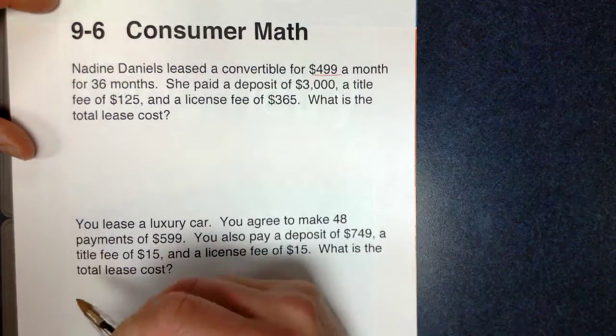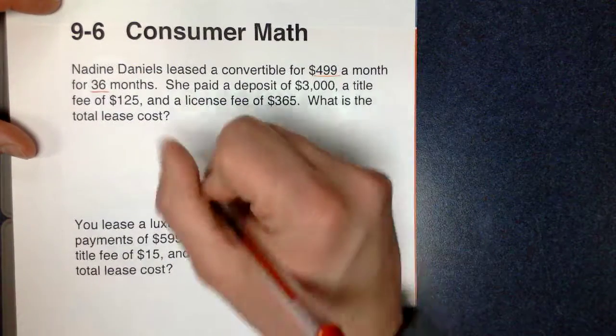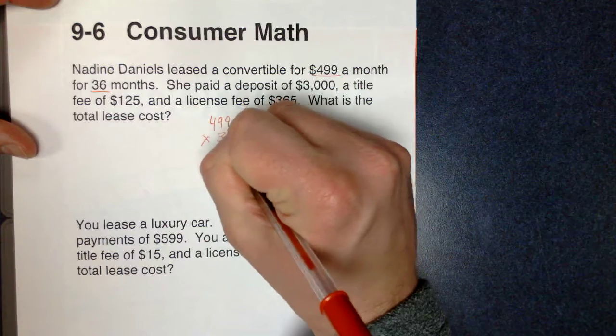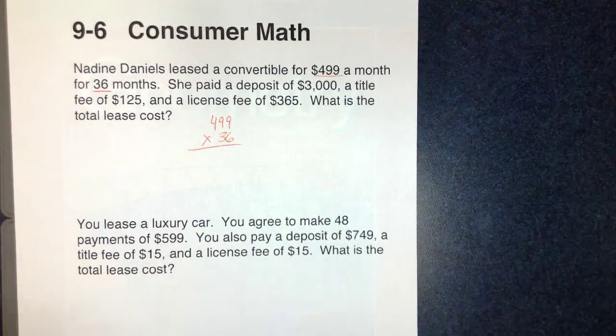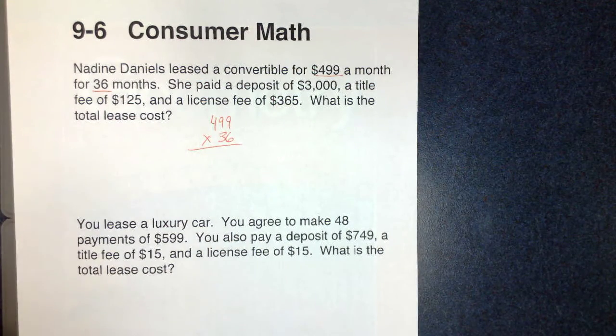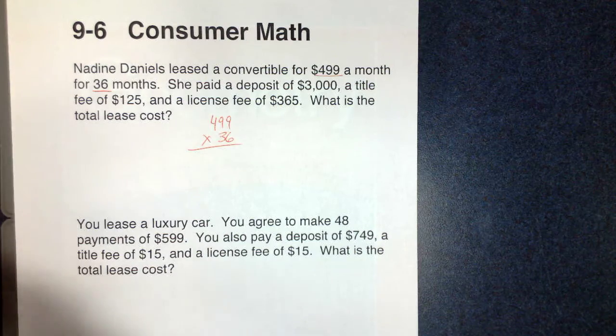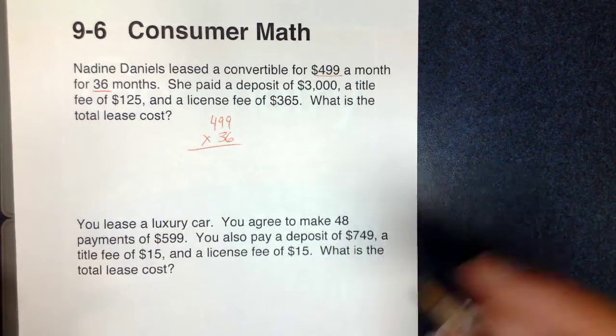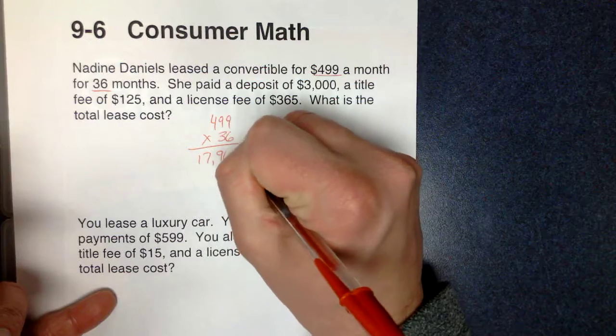So she's going to pay $499 a month. She's going to do that for 36 months. So that's the first thing we're going to do, $499 times 36. Every month for 36 months, she's going to pay $499. If we do that on the calculator, that comes out to $17,964.